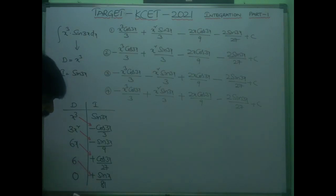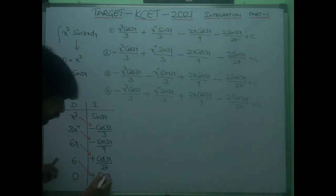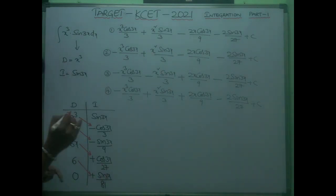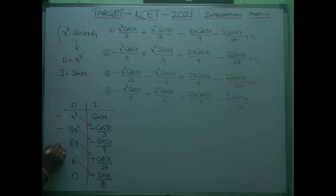Since the derivative column reaches zero after four steps, we stop there. Using the alternating sign pattern +, −, +, −, multiply diagonally: (+)·x³·(−cos3x/3), then (−)·3x²·(−sin3x/9), then (+)·6x·(cos3x/27), then (−)·6·(sin3x/81). Combining signs: −x³·cos3x/3 + x²·sin3x/3 and continuing gives the full expression. Checking the sign pattern against the answer options confirms the fourth option is correct.